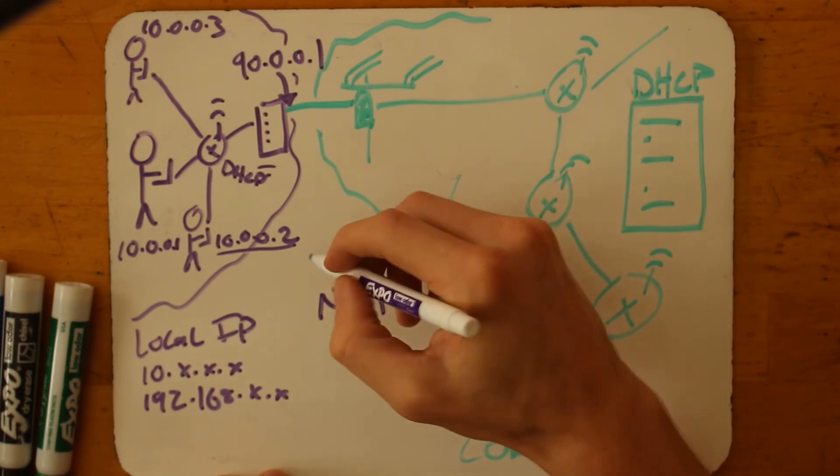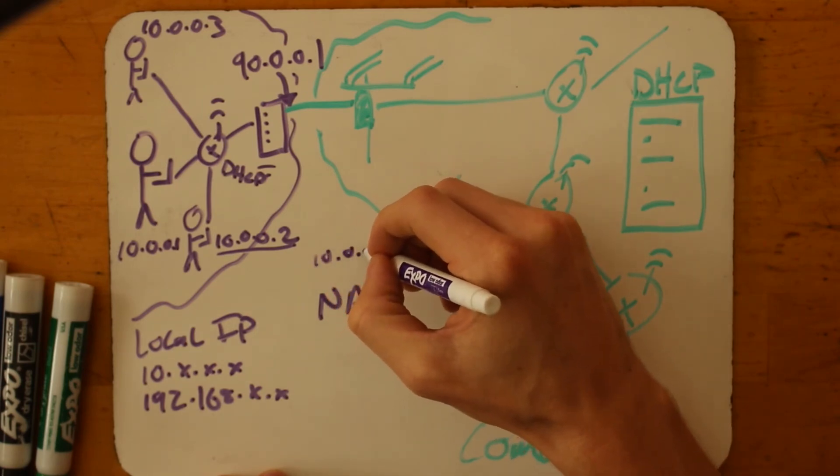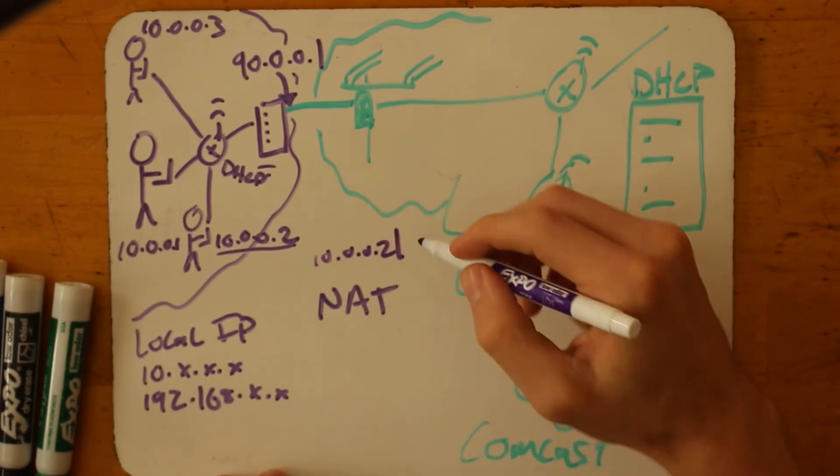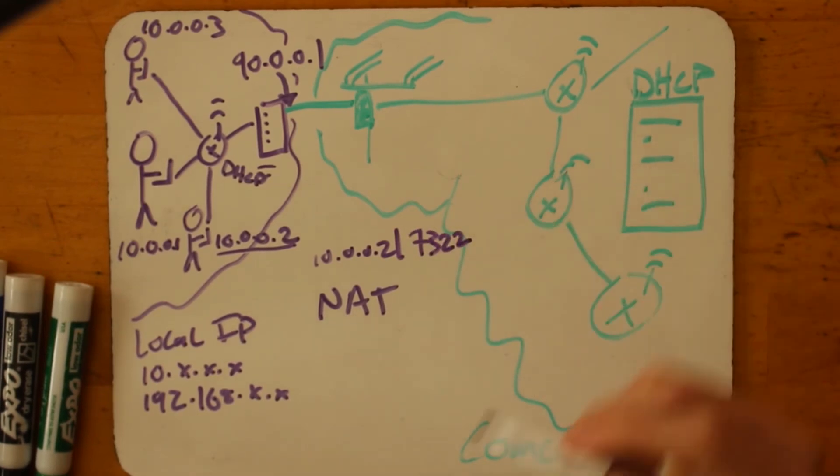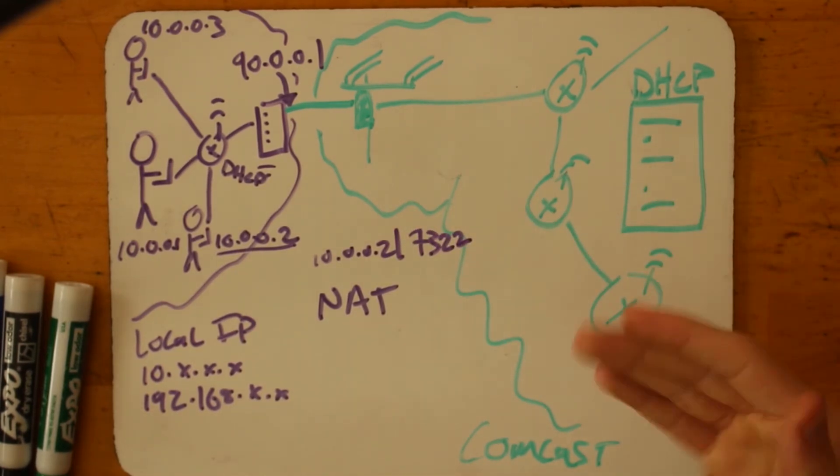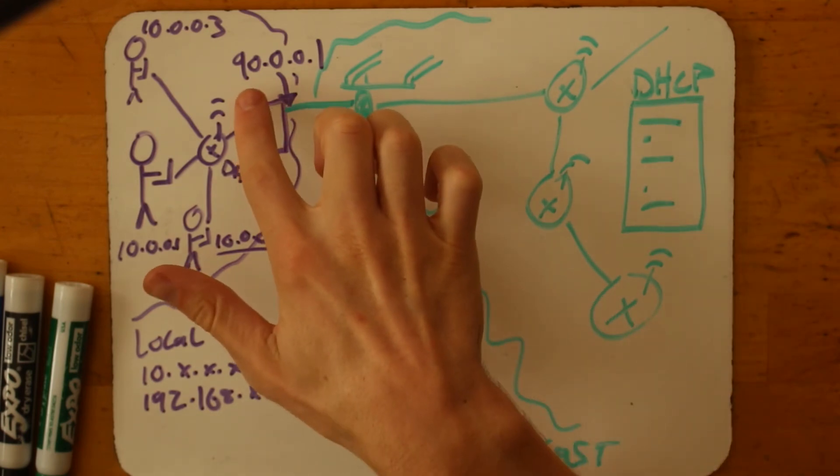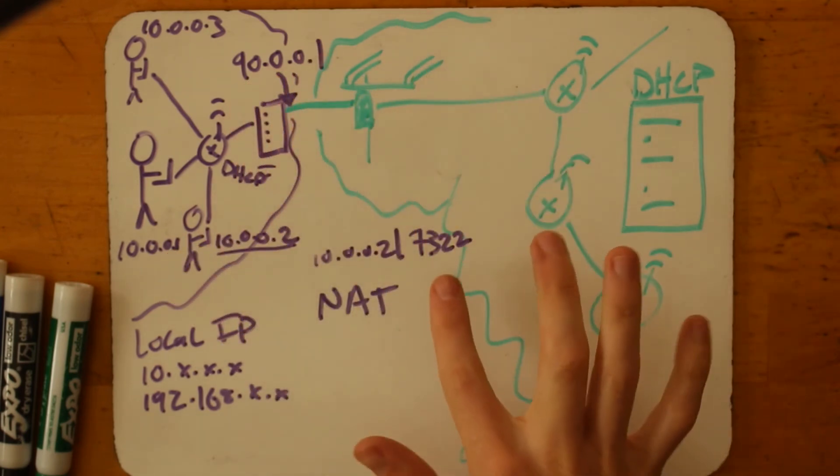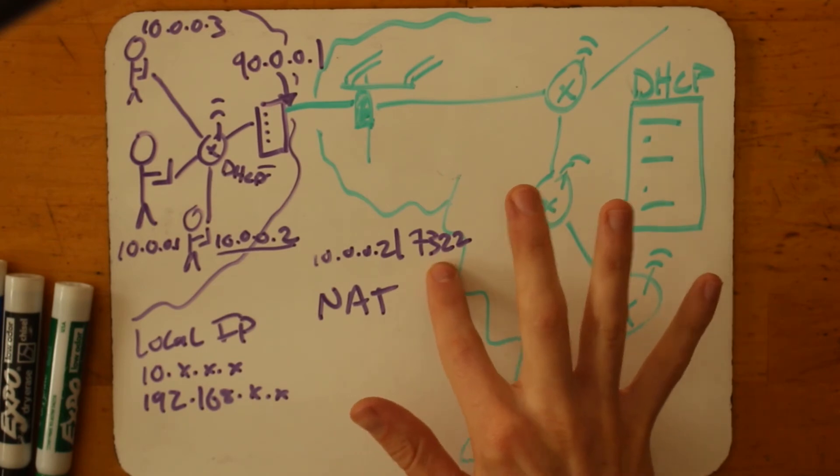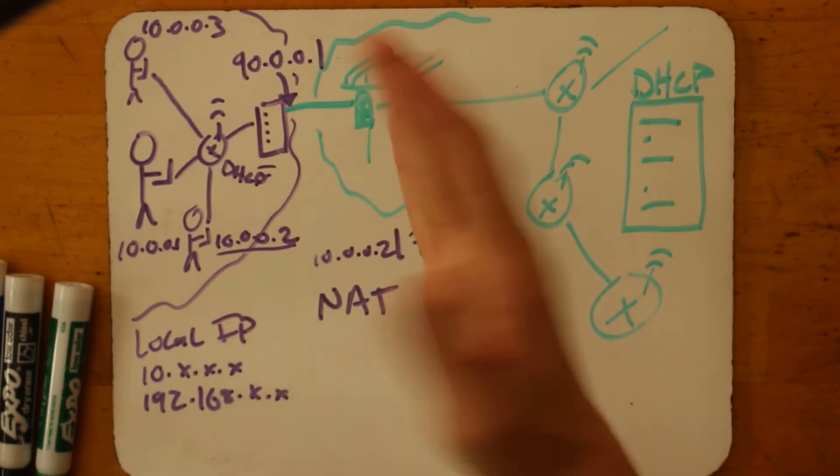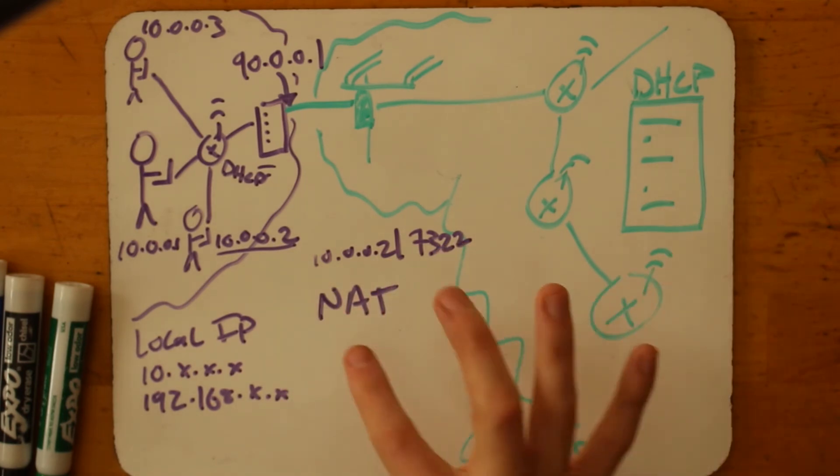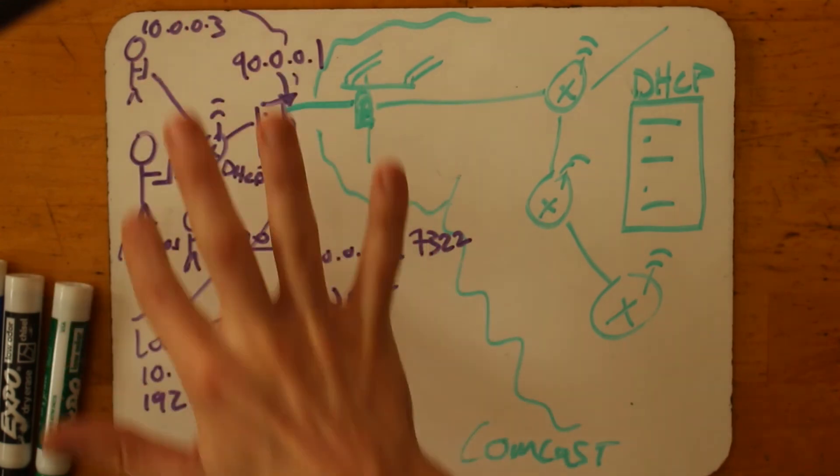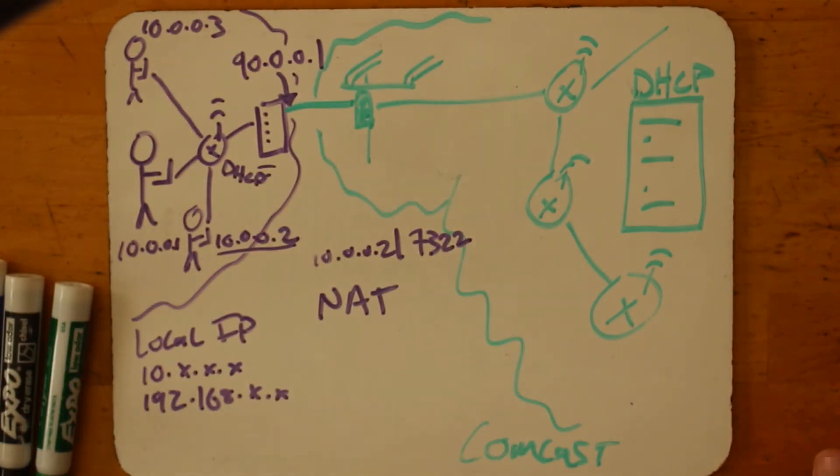So when it receives some request from 10.0.0.2 and that request reaches it, there's a table that it says, okay, I'm going to make a mapping between this IP address, this private IP address, and a port number that when someone responds, I'll say 10.0.0.2 is associated with port number 7,322. That way, any inbound request bound for IP address 90.0.0.1 with port number 7,322, the modem knows to route that, that's actually for 10.0.0.2. And there'll be an entry in the network address translation table for all of the devices on the local network.